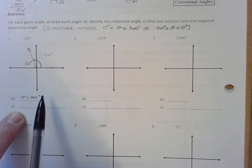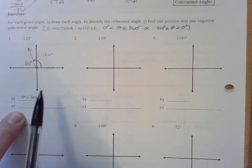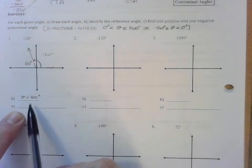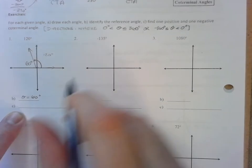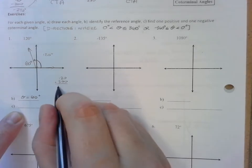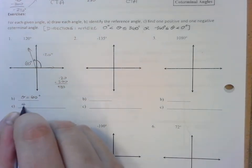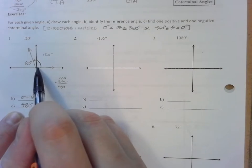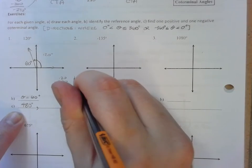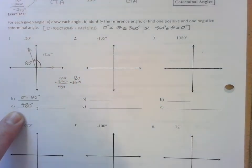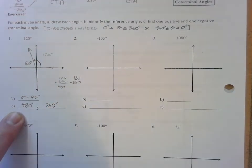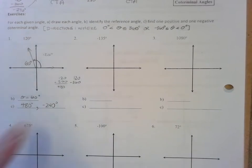Let's find one positive and one negative coterminal angle. I don't want to give the same answer like 120. Let's add 360 to 120: that gives me 480 degrees, a positive coterminal angle — one full revolution and another 120 degrees after it. For a negative coterminal angle, subtracting 360 gives us negative 240 degrees, which is between negative 360 and 0.